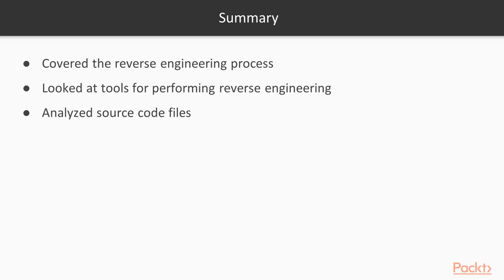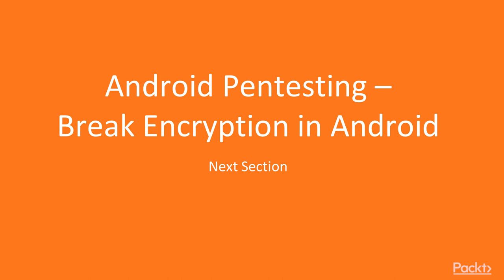In this section we covered: what is reverse engineering and the task information, what tools are available — like dex-to-jar and JD-GUI — and finally how we can analyze the source code file using JD-GUI to find the target file. In the next section we are going to learn about Android pen testing and breaking encryption in Android. Thank you so much.